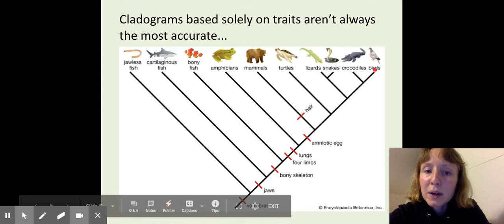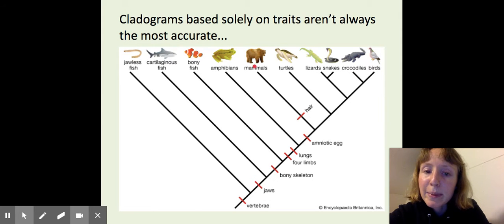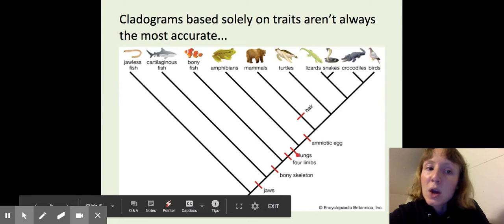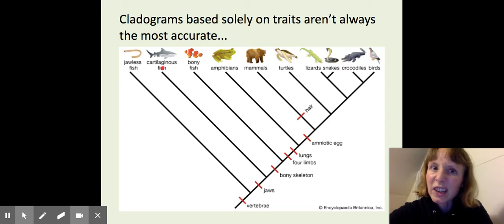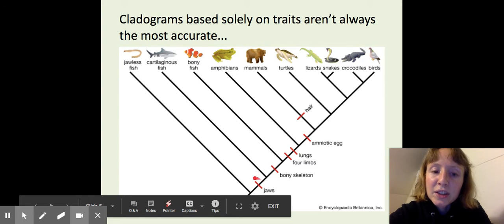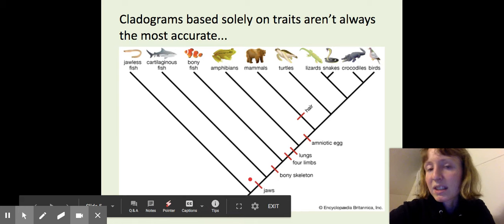So crocodiles, birds, and mammals all share a common ancestor that had lungs. Whereas the shark doesn't share that common ancestor. It diverged earlier, but it does share a common ancestor with us that had jaws, stuff like that.